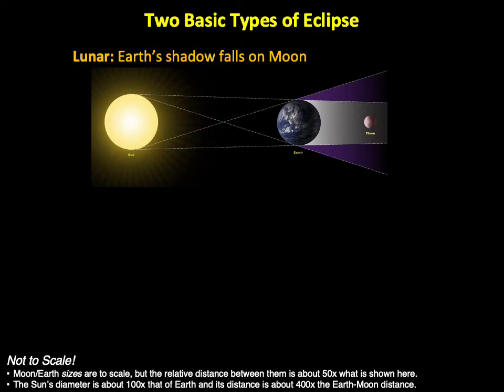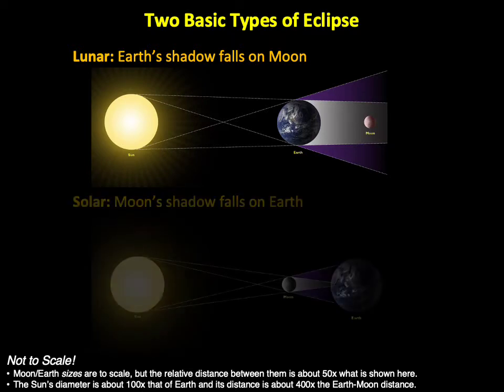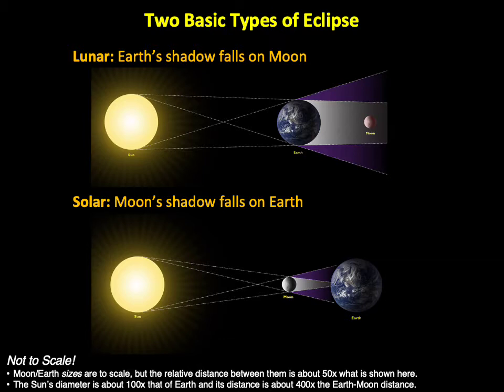There are two basic types of eclipse. A lunar eclipse occurs when Earth comes between the Moon and the Sun, so that Earth's shadow falls on the Moon, and a solar eclipse occurs when the Moon comes between Earth and the Sun, so that the Moon's shadow falls on Earth.